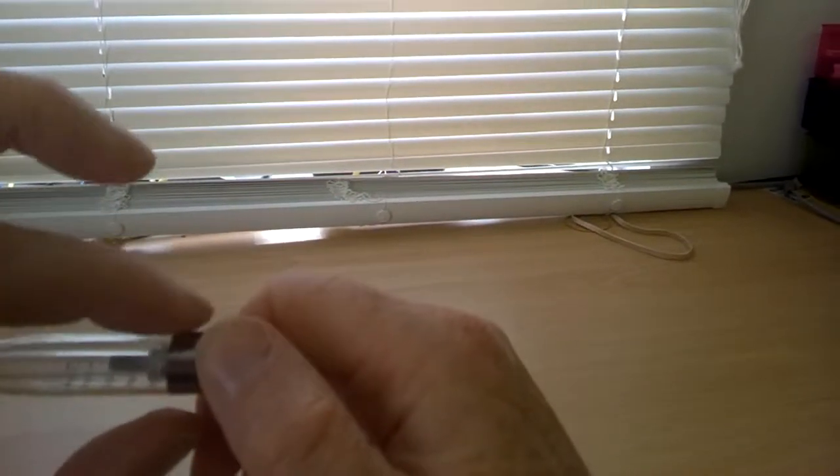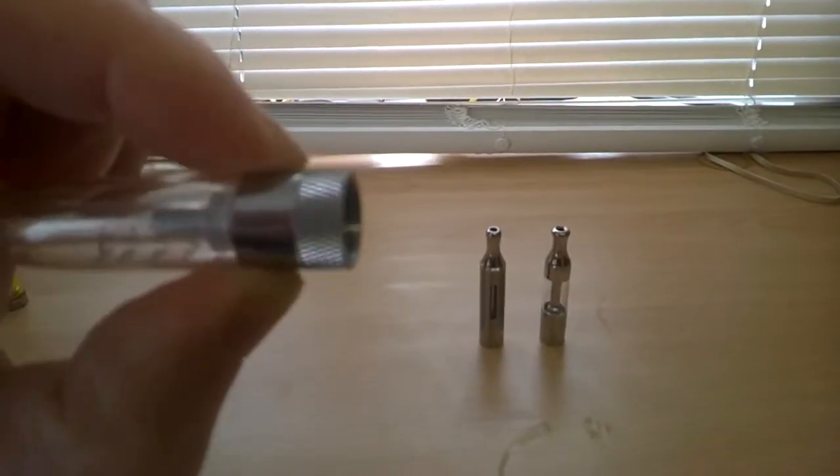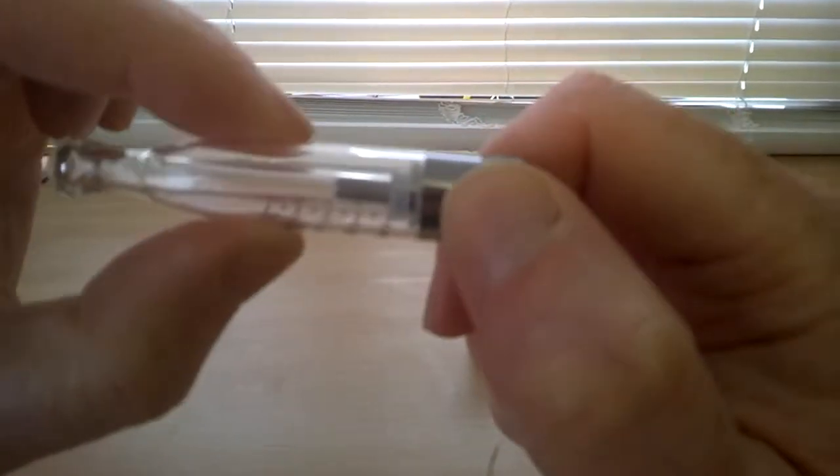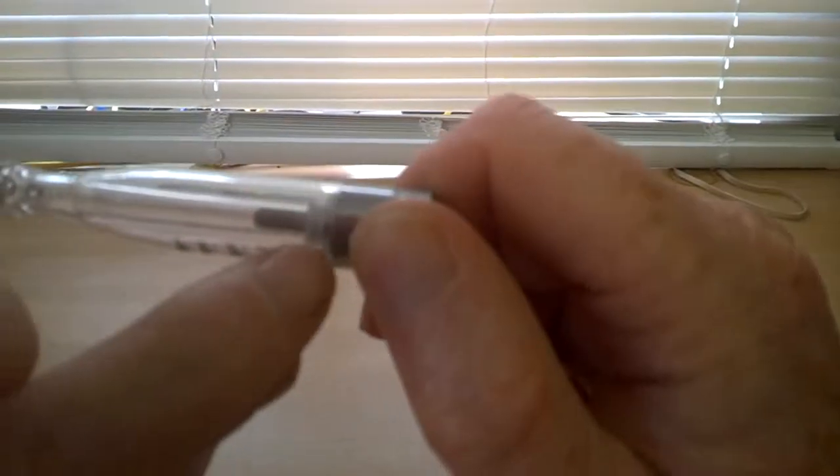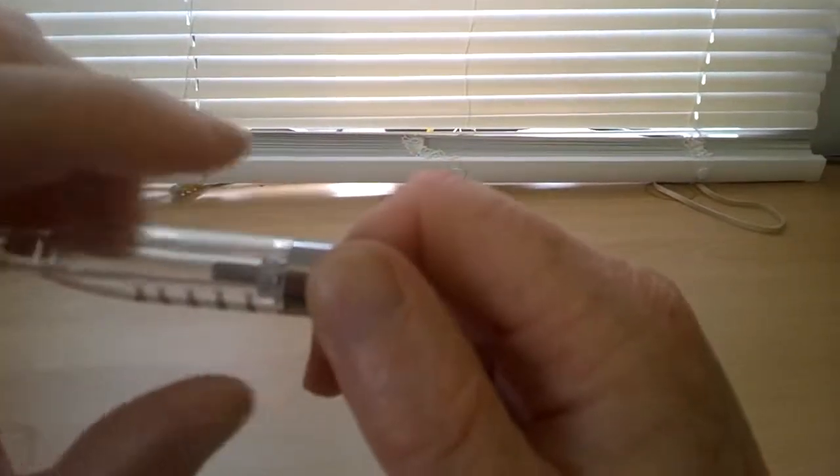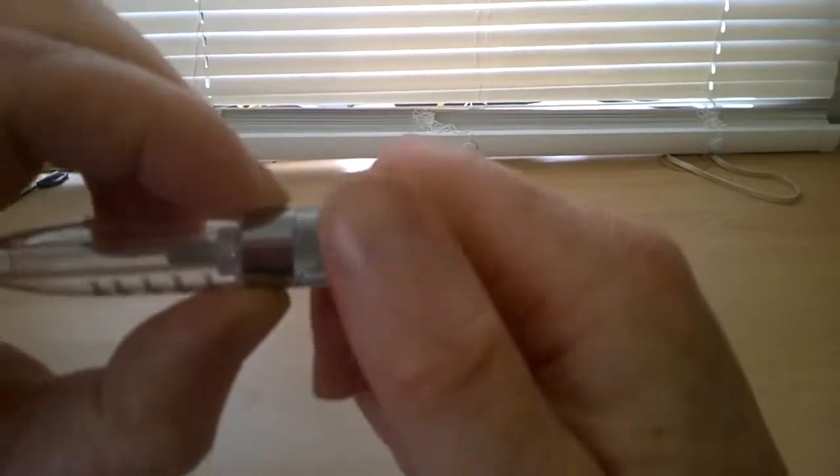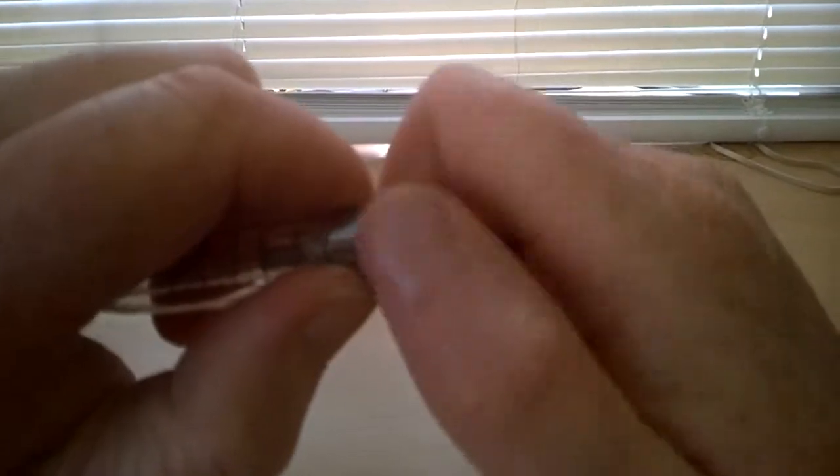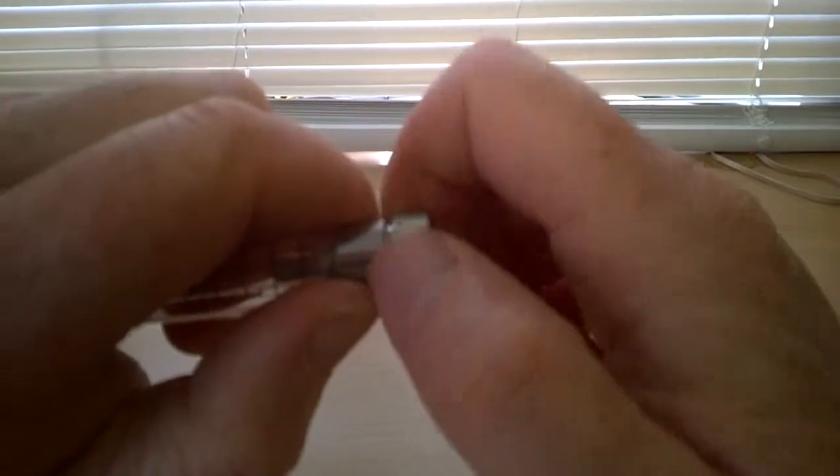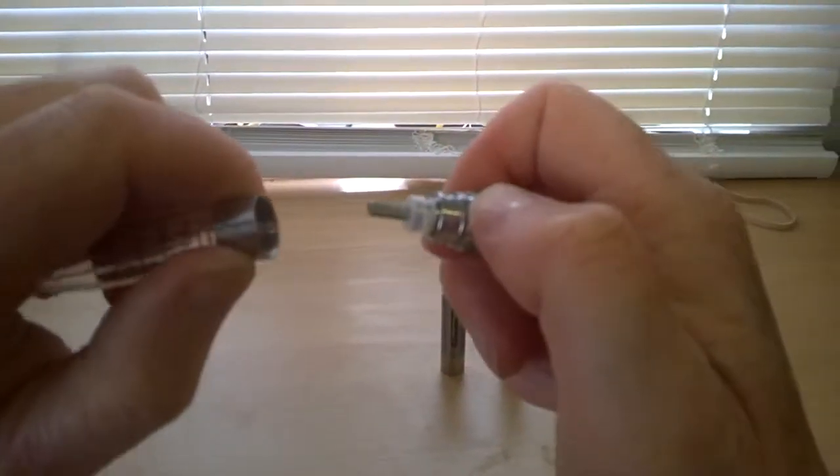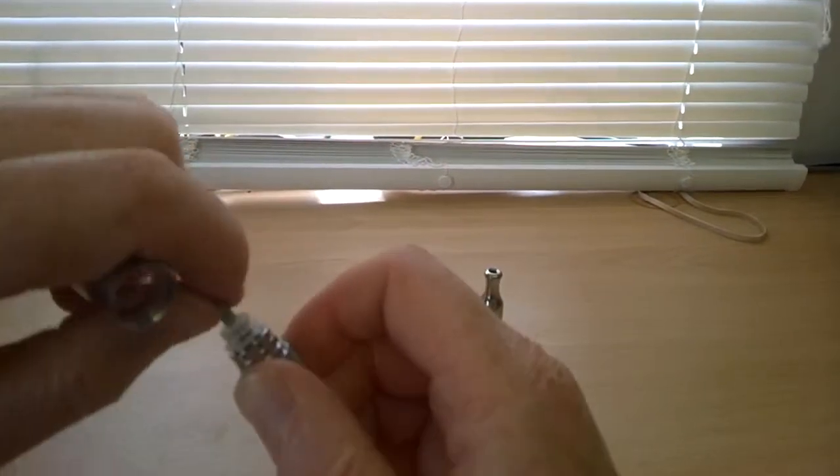Again, when you undo this, always hold it at that metal band there, don't start holding it here and unscrewing it, you will break the seal between there and there, and it'll start to leak. So, please, hold that metal band, unscrew like so, pull out, and there's your atomizer head.